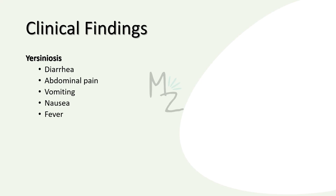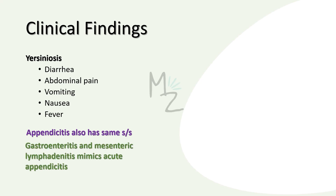Clinical findings: Yersinia pseudotuberculosis presents with symptoms like diarrhea, abdominal pain, vomiting, nausea, and fever. Appendicitis has the same symptoms. Gastroenteritis and mesenteric lymphadenitis can mimic acute appendicitis.